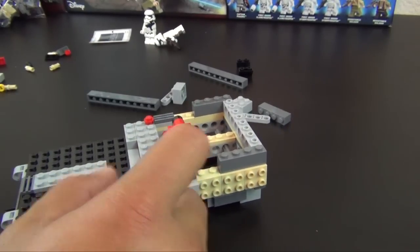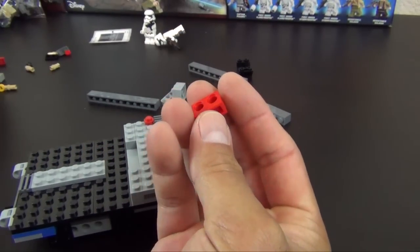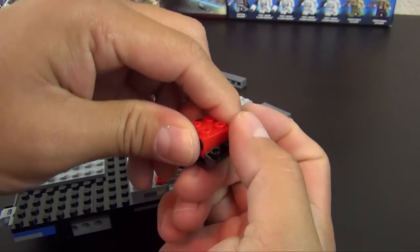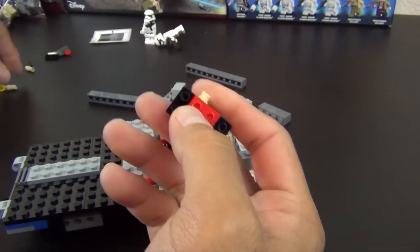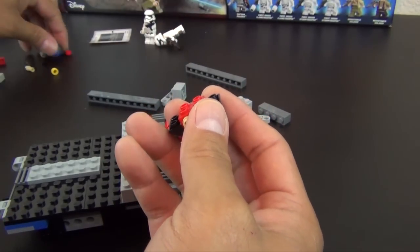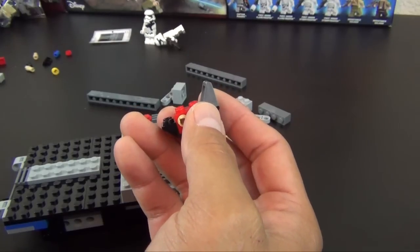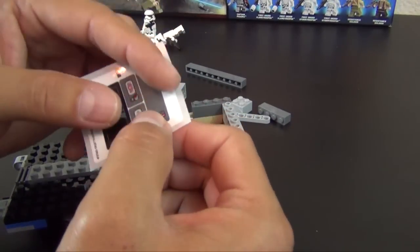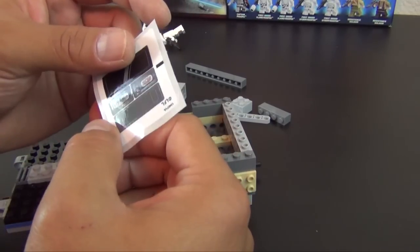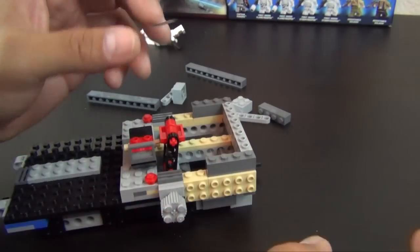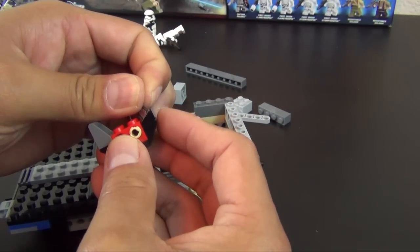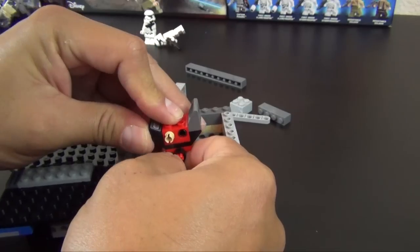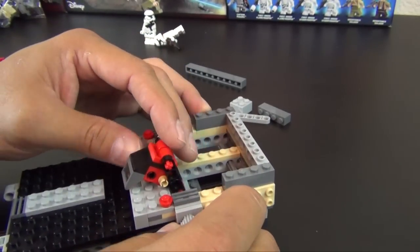Alright, I have a red technic brick, put a friction pin in there, attach another brick. Alright, except we're going to use our first sticker. And they don't number these stickers. There's only four of them on there, so maybe they decided you could figure it out, we don't need to number them.